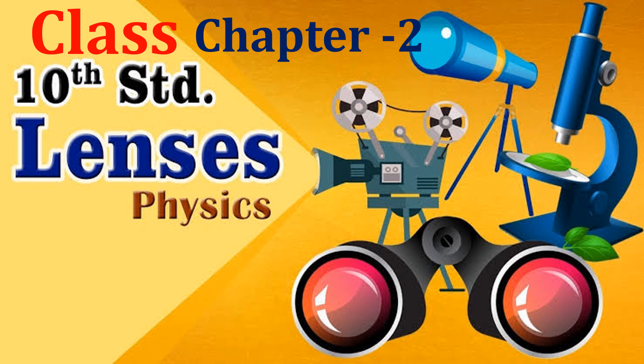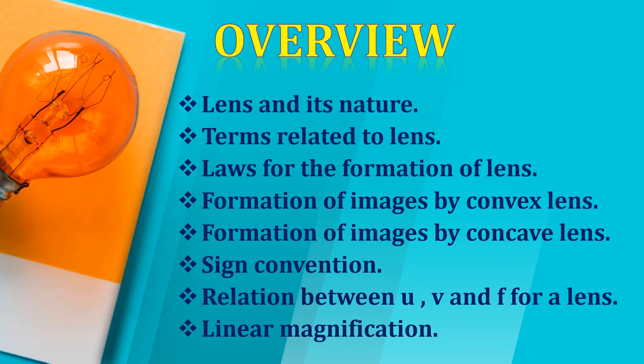Because if you have done chapter 1 well, then 50% of Lenses will be clear for you. But if you have not done that lesson well, then you will have some difficulties to understand it. When chapter 1 is clear for you, 50% of Lenses will already be clear, and you will have to learn about 50% of additional things. Let's start our new lesson today — Lenses.